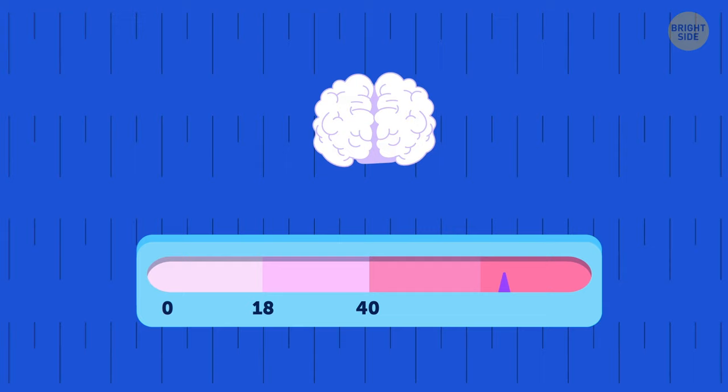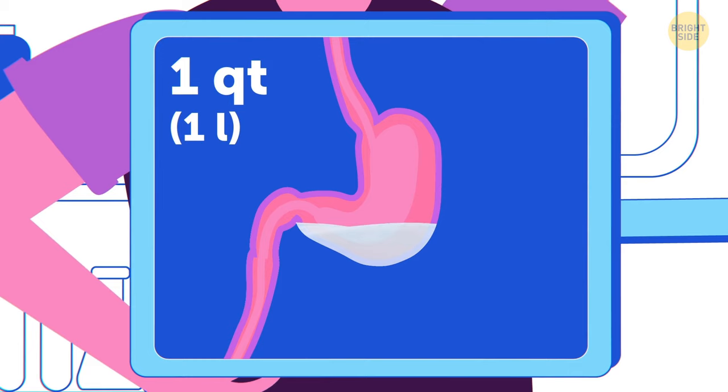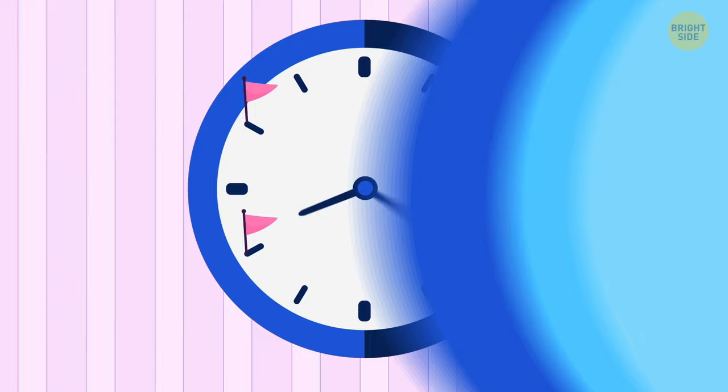Your stomach usually has a volume of 1 quart, but can stretch to hold 1 gallon. We spend 10% of our waking hours with our eyes closed just from blinking.